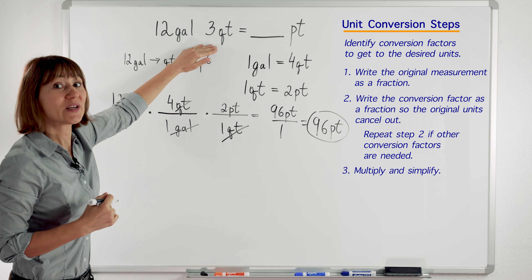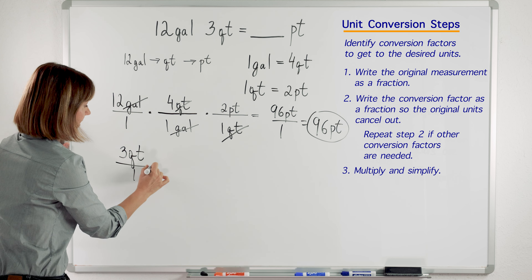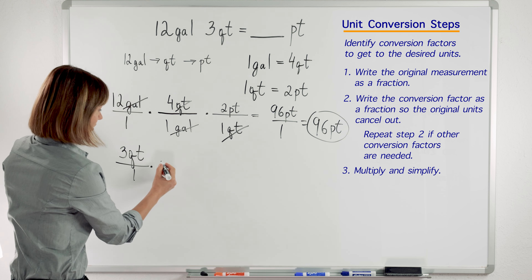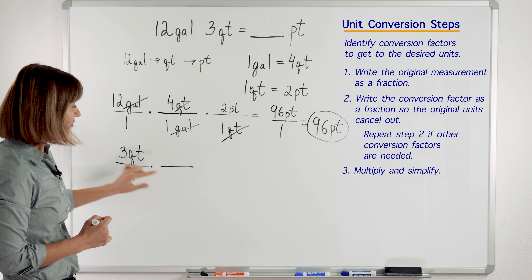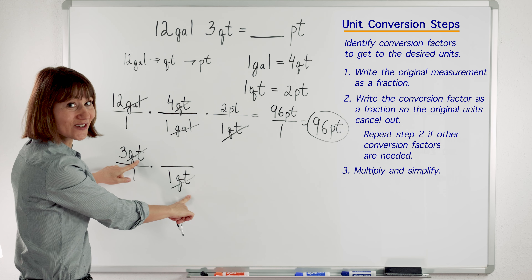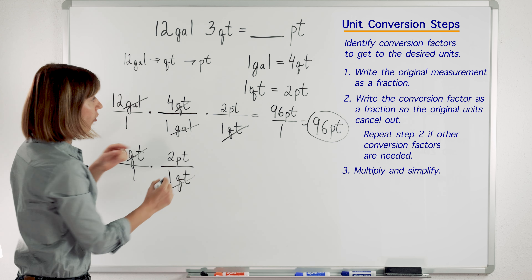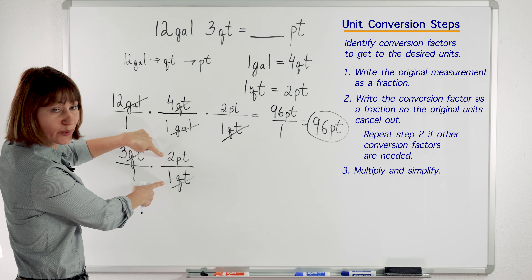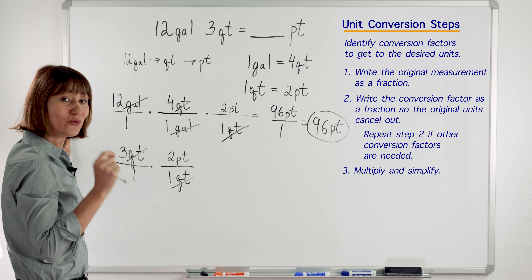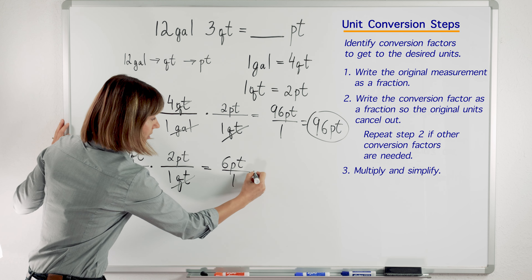Now let's work on our second quantity: 3 quarts. We will do the same thing. We have 3 quarts — we will write it over 1, because we write the original measurement as a fraction. Then we pick up our conversion factor: 1 quart equals 2 pints. You have quarts on top, so you put quarts on the bottom in the denominator so your original units cancel out — that's how you know you're doing it right. And you will put 2 pints right here. You take your conversion factor and plug it in to cancel your unwanted units. Now we got rid of quarts and we got 2 pints. We do the math: 3 times 2 is 6. So we have 6 pints.